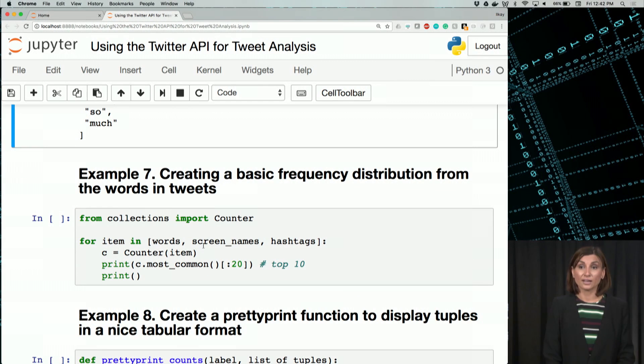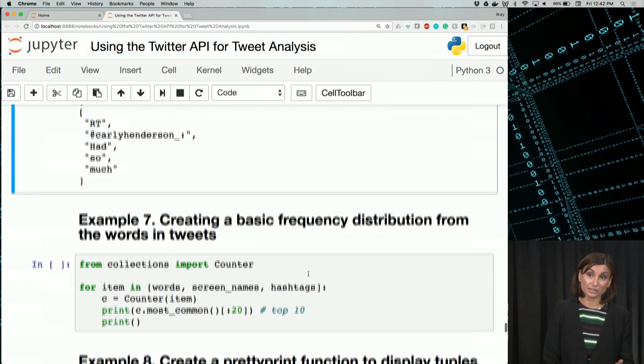So we are counting here. The counter object provides a convenient method, as you know, that gives us the commonly used words. Here we have the four items in words, screen names, hashtags, all those lists we created.